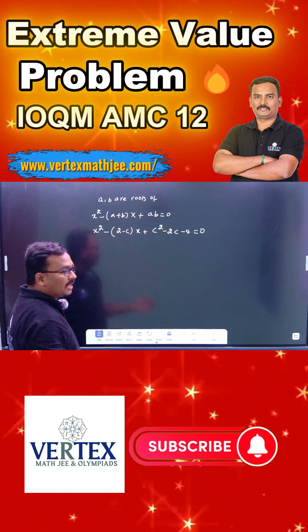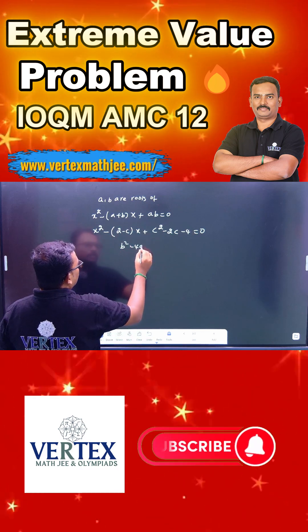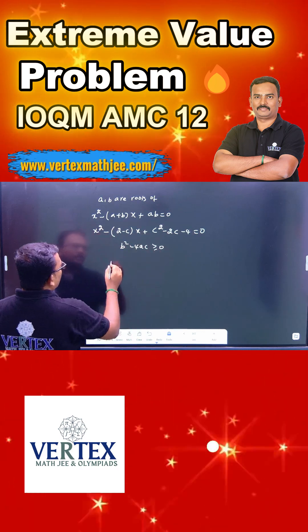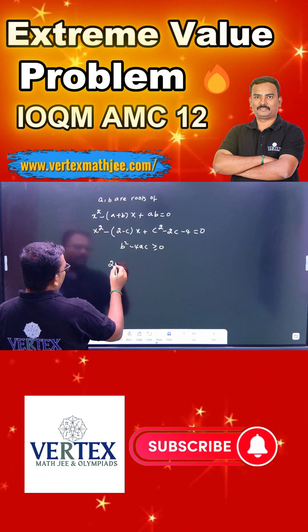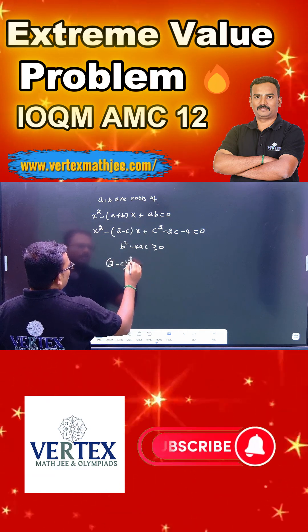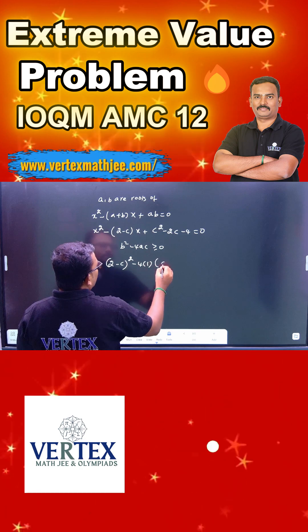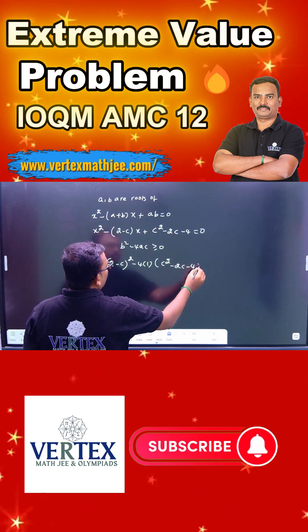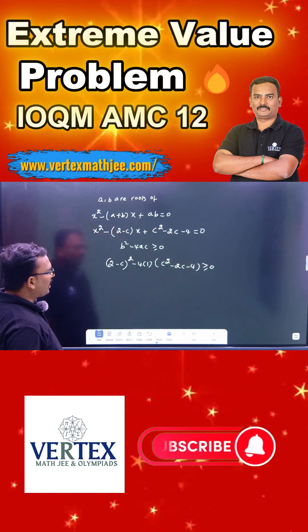So this quadratic equation has real solutions. That means b squared minus 4ac is greater than or equal to 0. What is b here? Minus of 2 minus c whole squared. That is same as 2 minus c whole squared. Minus 4 times 1 times c squared minus 2c minus 4 is greater than or equal to 0. You can simplify this.